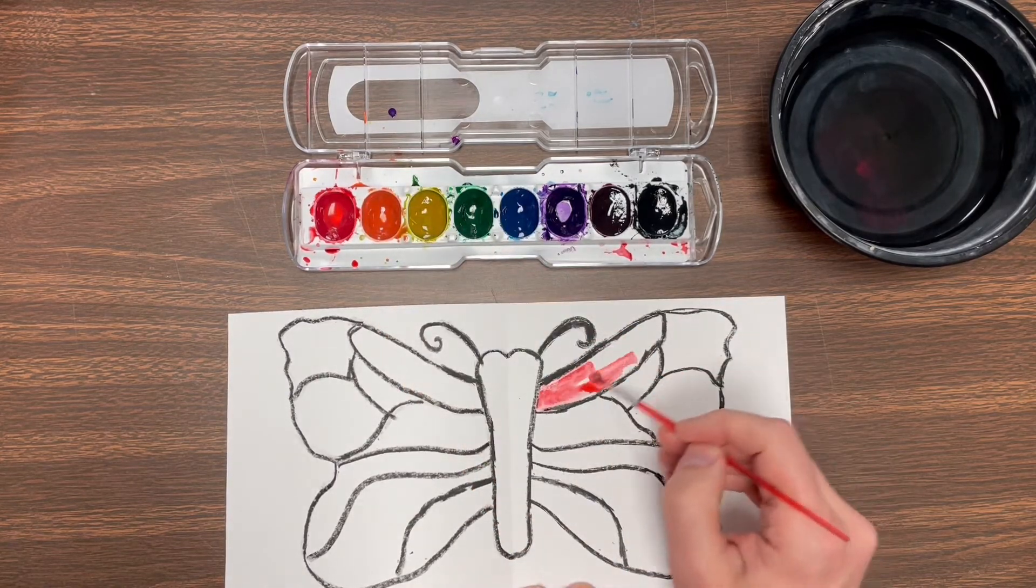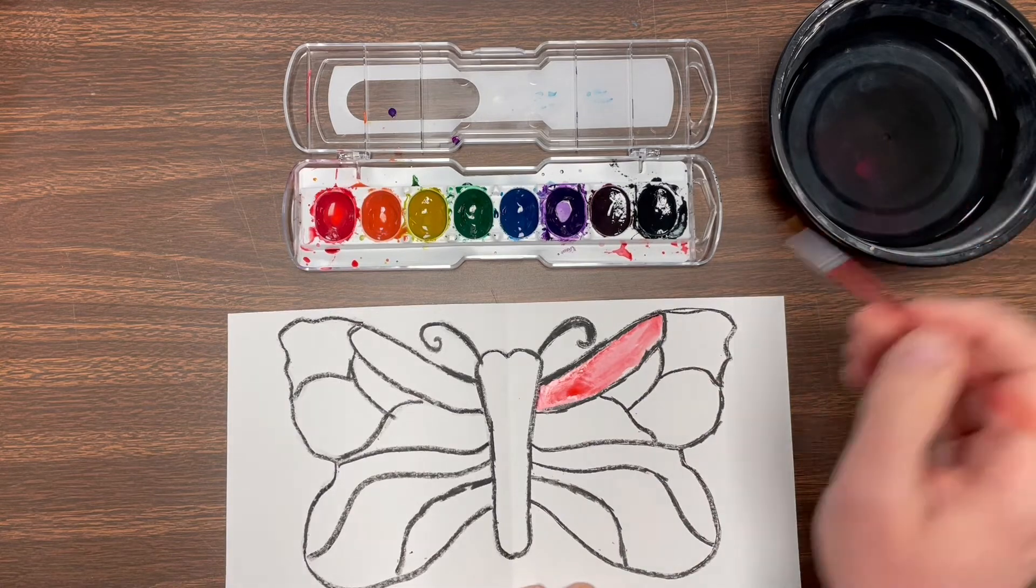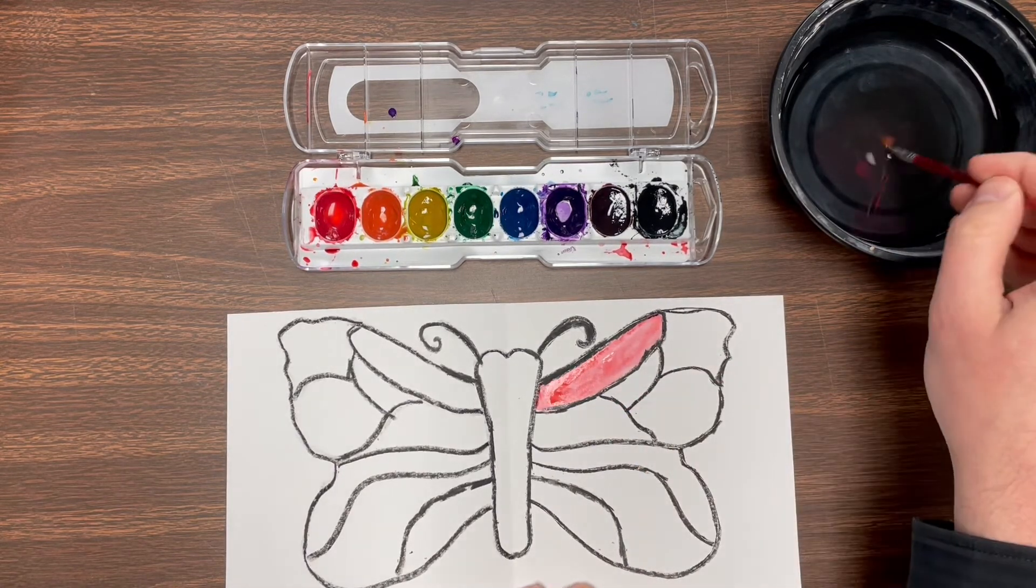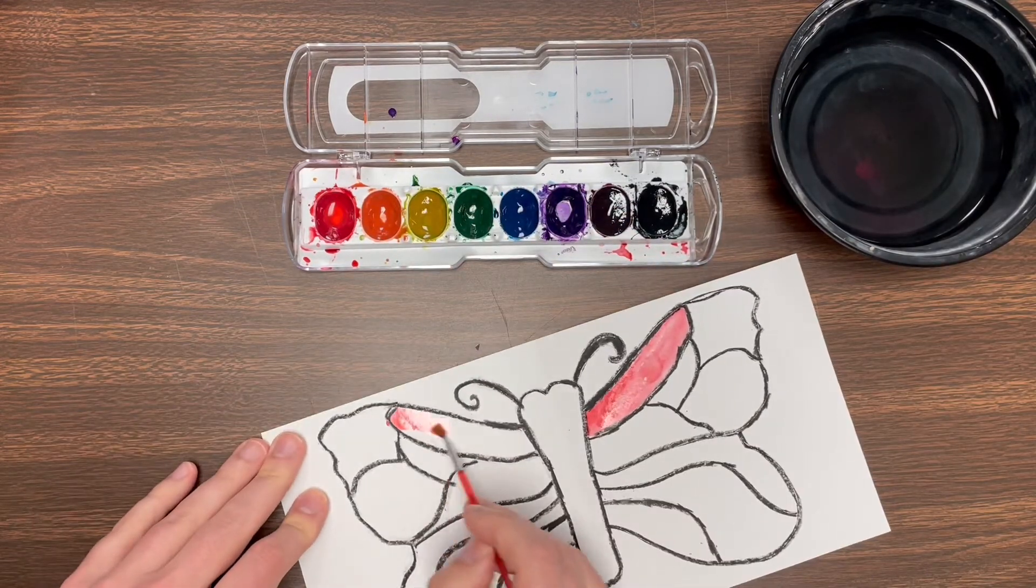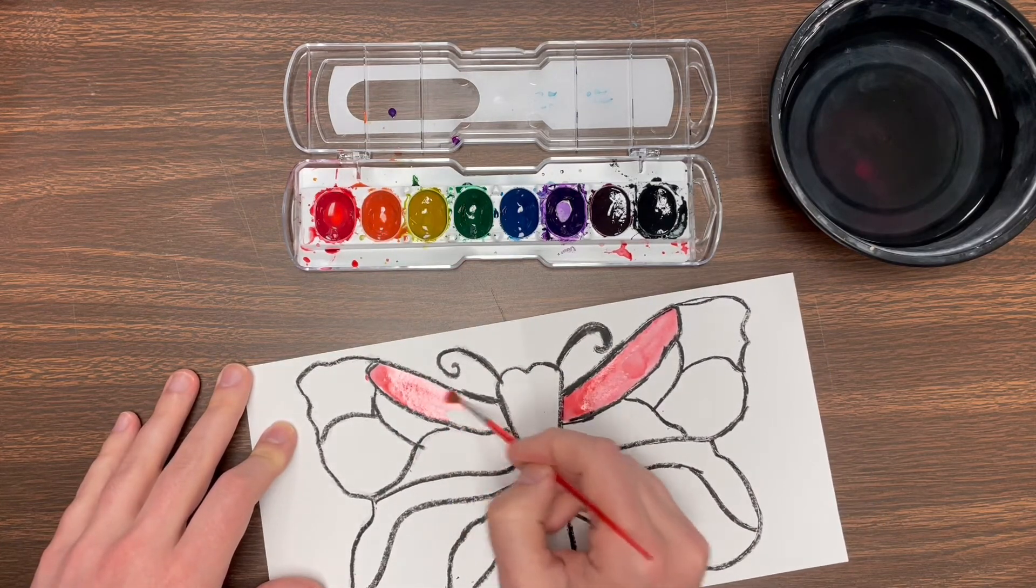Once I have painted a section then I'm going to go to the other side and do it the exact same color. We want to keep it symmetrical, same on both sides like a real butterfly would be.